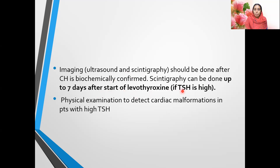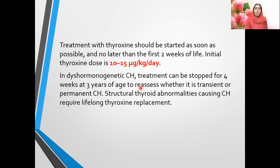Imaging can be done up to 7 days after the start of L-thyroxine. If TSH is high, physical examination for cardiac malformation should be done. Treatment is thyroxine; it should be started as soon as possible and no later than the first two weeks of life. Initial thyroxine dosage is 10 to 15 micrograms per kg per day. In case of dyshormonogenic CH, treatment can continue up to three years, then stop for four weeks and redo T4 and TSH values.